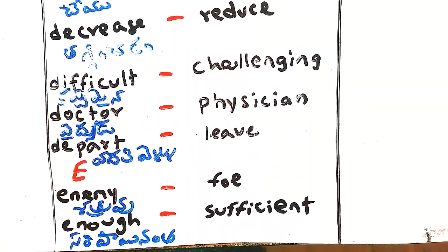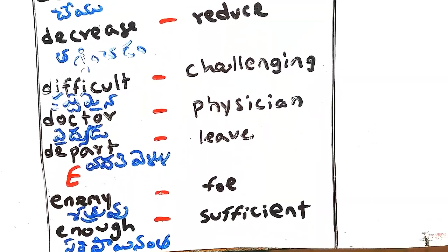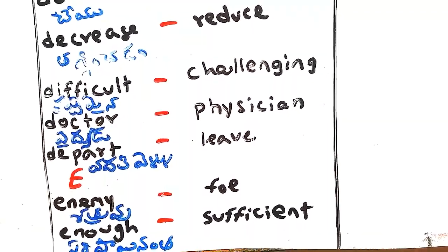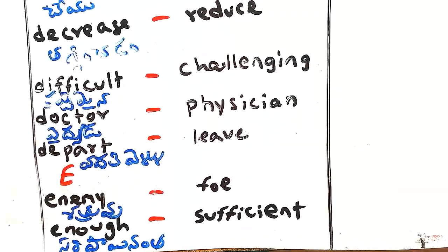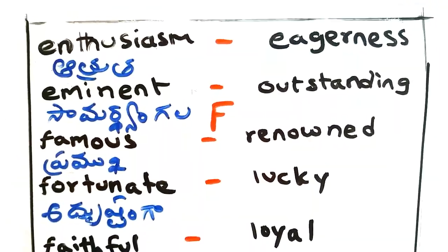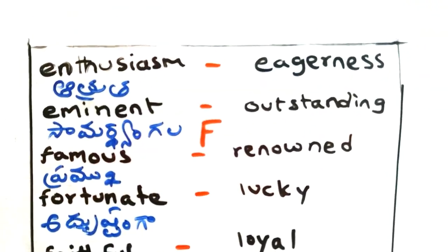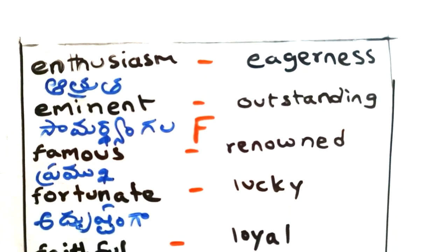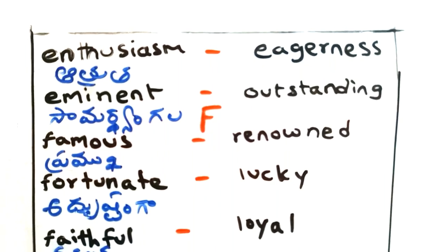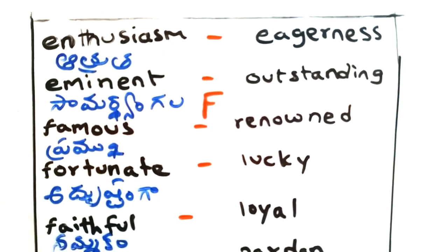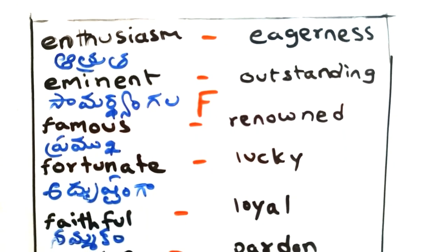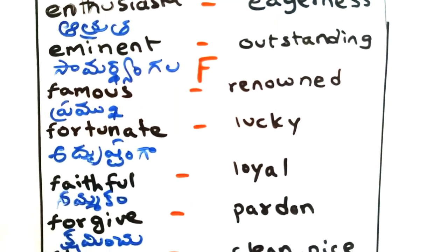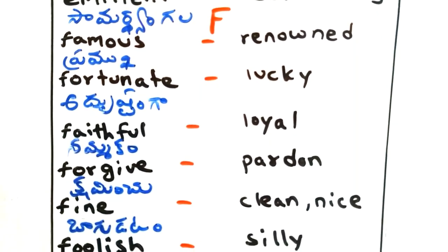Enemy - sethruvu, foe. Enough - saripoayinantha, sufficient. Enthusiasm - aathruta, eagerness. Eminent - samardhyangala, outstanding. Famous - premuka, renowned.